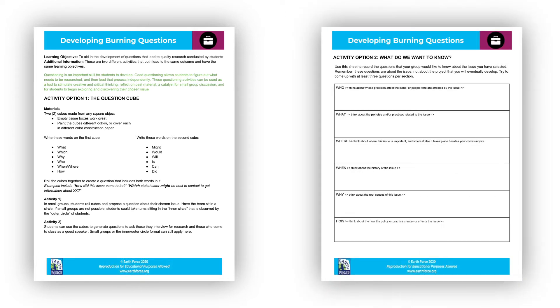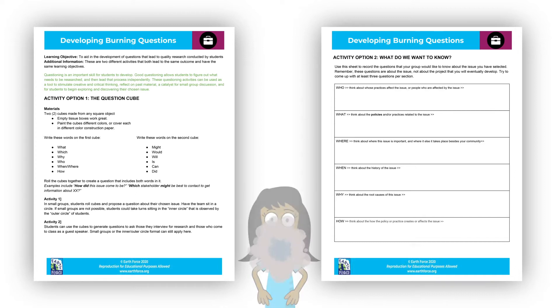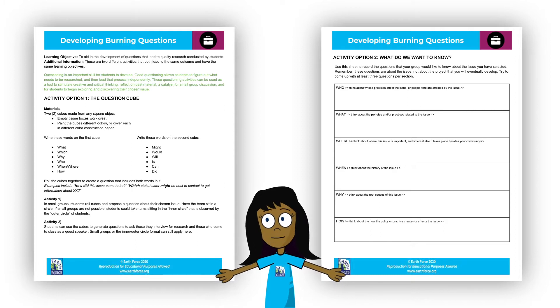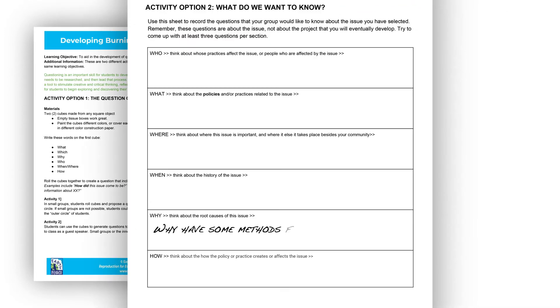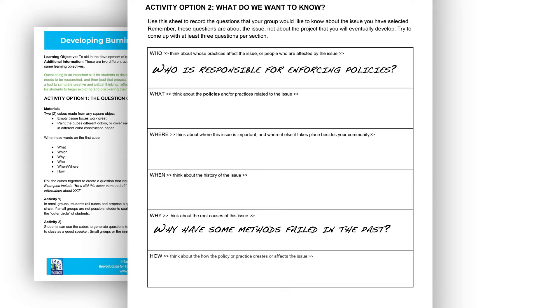Once youth understand the areas to focus research, allow time for them to think of burning questions that will spark specific areas of inquiry that interest them. We have graphic organizers to help them stay on track — consider these organizers living documents that can be added to as Step 3 progresses. Questions youth may want to ask include: Why have some methods of addressing this issue failed in the past? Who is responsible for enforcing policies related to this issue? What is the history of this issue in my community?